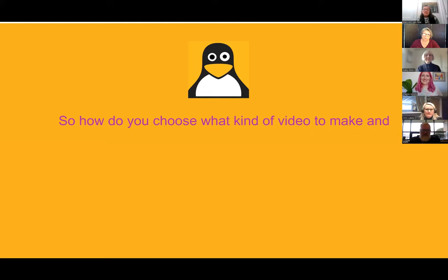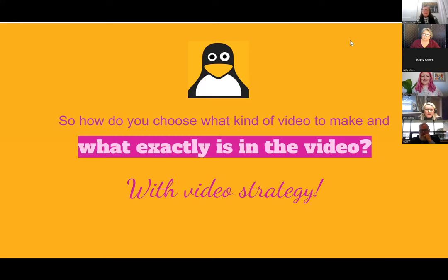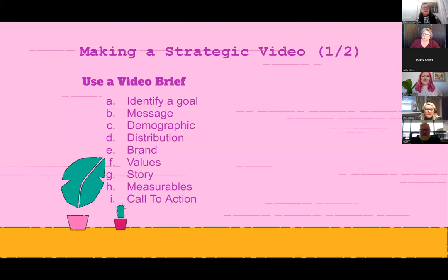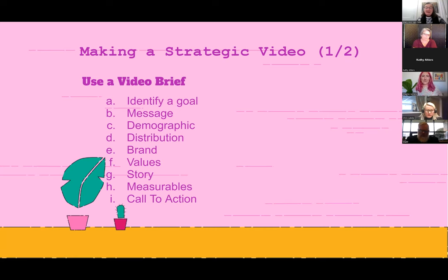How do you choose what kind of video to make? We use video strategy. The key is to use a video brief — a document that goes over all the topics to ensure you're strategic throughout the process of making a video. Start by identifying a goal: is it to get more donations, recruit better, build awareness of a service or the whole organization? Is there a stigma you're trying to communicate against, or a roadblock? What is the goal with the video?